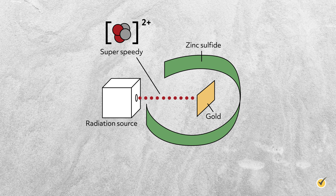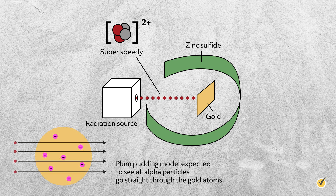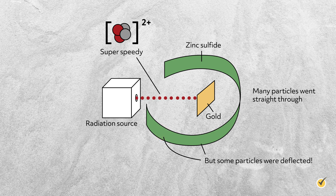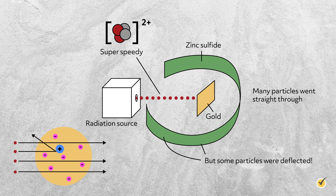Since they had no reason to believe that the plum pudding model was wrong, they hypothesized that most of the alpha particles would pass straight through the gold atoms unperturbed, theorizing that the positive charge was so diffuse that it wouldn't repel them. Instead, they discovered that while most of the alpha particles did travel straight through the gold atoms, a small number were significantly deflected and some were even reflected straight back towards the radiation source. This was not at all consistent with the plum pudding model, so Rutherford proposed that the positive charge of the atom was concentrated in a heavy mass at the center, while the rest of the atom was mostly empty space. This explained why some alpha particles — those that missed the positive center — went straight through, while others that did hit the positive center were significantly deflected. Rutherford named the center mass the nucleus and the constituent positive particles protons.